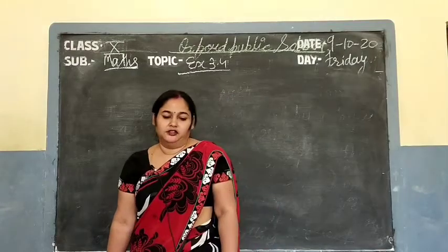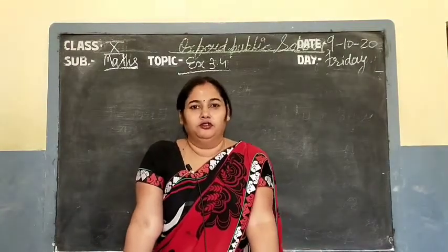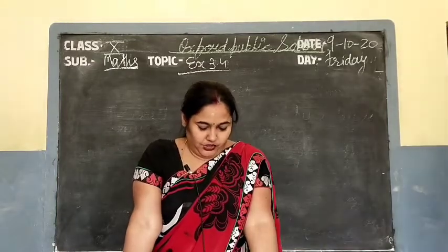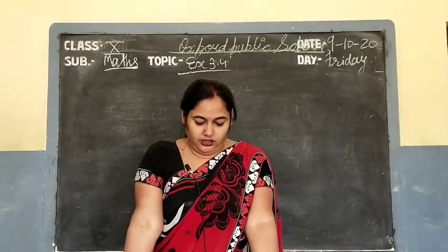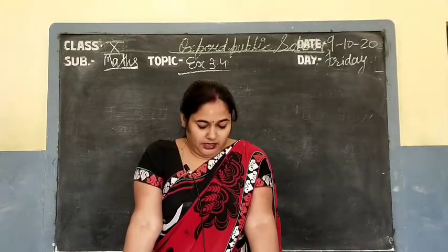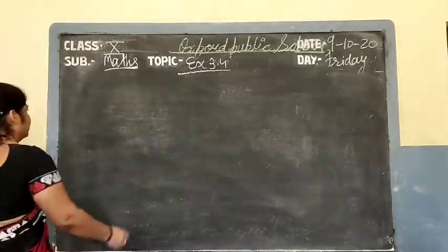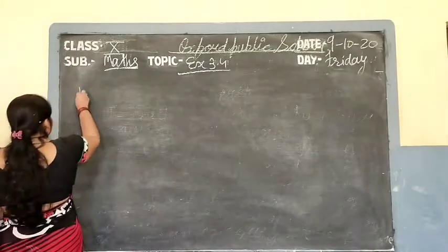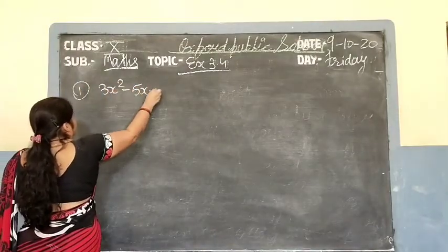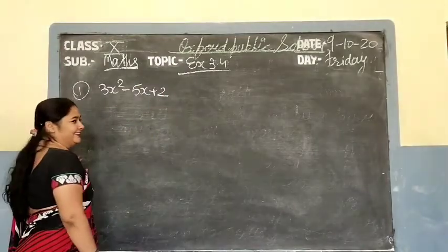Hello students. Last video I completed exercise 3.3, today we start exercise 3.4. Now first question: solve the following quadratic equation by the method of the perfect square. First number: 3x square minus 5x plus 2. Find by the perfect square method.